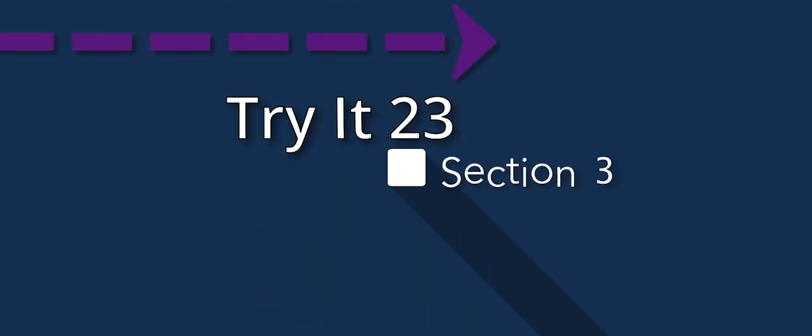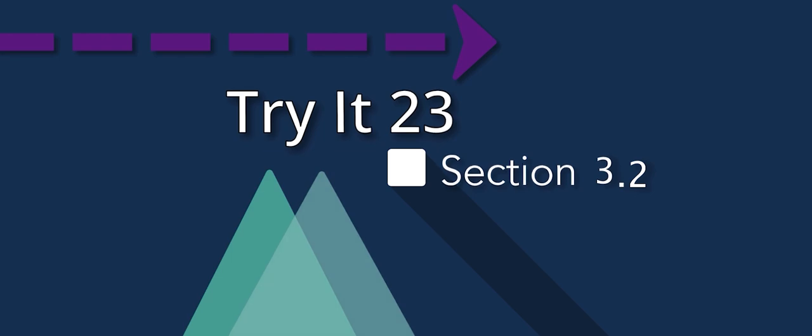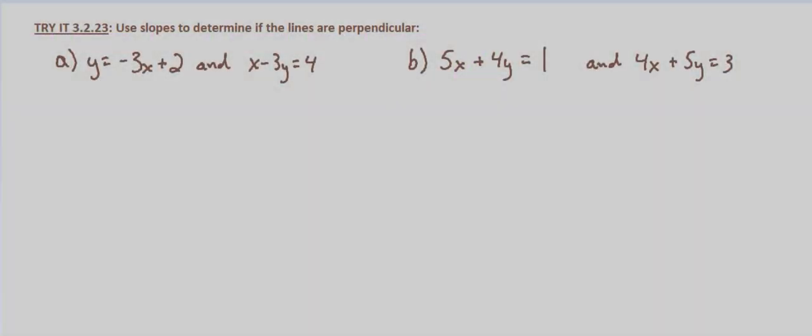Now we're looking at equations and being asked to determine if the lines are perpendicular. With parallel lines we had to look at both the slopes and the y-intercept because they could be the same line. With perpendicular lines however, we know that their slopes are opposite reciprocals, or another way of looking at it is that their product equals negative 1.